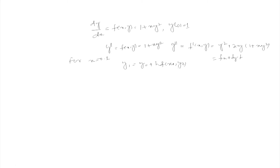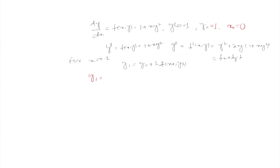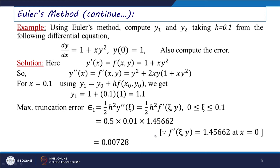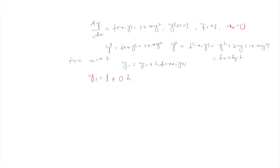Since all values are known: Y0 = 1, X0 = 0. Substituting: Y1 = 1 + 0.1 × F(X0, Y0) = 1 + 0.1 × (1 + 0·1²) = 1 + 0.1 × 1 = 1.1.